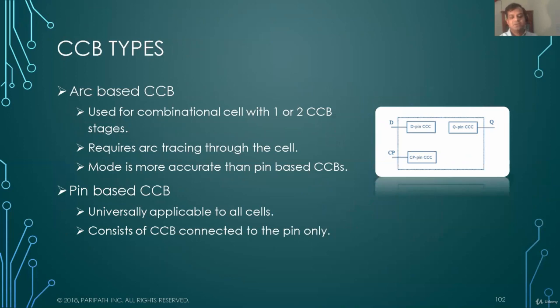There are two types of CCBs, arc-based CCBs and pin-based CCBs. Pin-based CCBs are universally applicable to all cells. Arc-based CCBs are more accurate only for the cells that are one or two CCB stages, like converter or NAND gate or NOR gates. Any more complex, like AOI and OAIs, AOIs and OAIs with more than two CCBs cannot be used for arc-based CCBs.